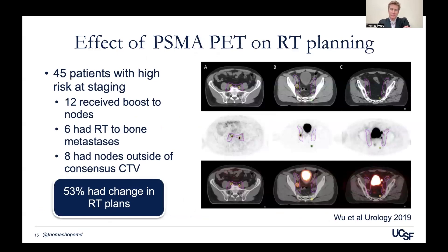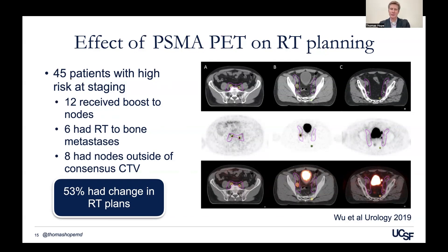A paper from 2019 out of our radiation oncology department showed that in patients with high-risk cancer at initial staging undergoing definitive radiation therapy planning, the PSMA PET changed plans in over half of patients. Even if it wasn't deciding whether to do RT, it tells you where sites of disease are better — allowing you to boost pelvic lymph nodes or include disease outside standard consensus tumor volume — really highlighting how important PSMA PET is in patient management.